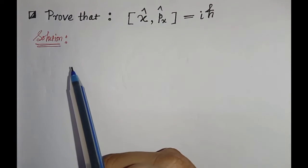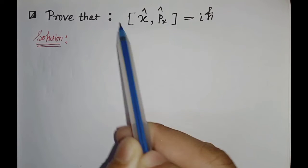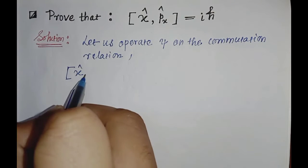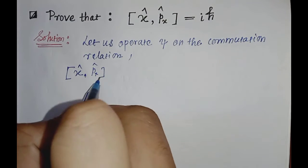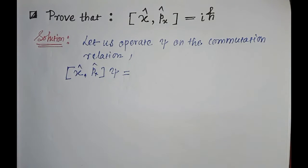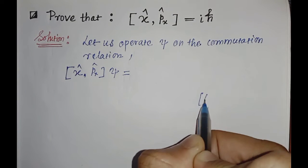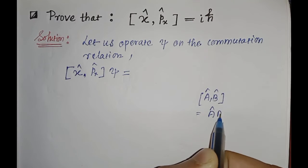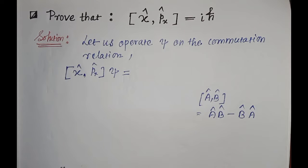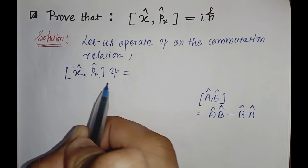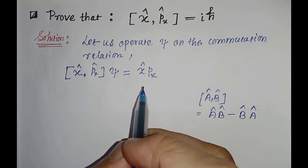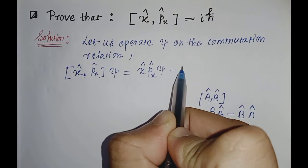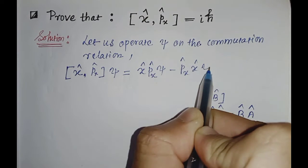To prove that, let us first operate ψ on this commutation relation. We will get [x, px]ψ, and we know that the commutation relation [a, b] can be written as ab minus ba. So from here we can write operator x, operator px ψ minus px x ψ.